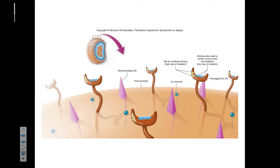If we zoom in even closer, we can see that the different surface markers on the influenza virus are going to allow for the virus to bind to target cells. Particularly, if we look at the H markers, those H markers are common targets for antibodies that we produce.